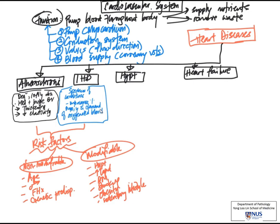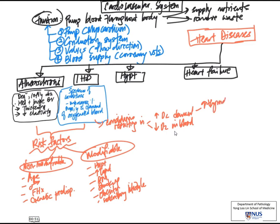For ischemic heart disease, there are also additional risk factors, because the definition involves an imbalance between demand and supply. Some conditions result in either increased oxygen demand or decreased oxygen supply. For increased demand, an example is hyperthyroidism or hormonal abnormalities. For decreased oxygen-carrying capacity in the blood, there are many conditions including anemia, carbon monoxide poisoning, or chronic longstanding lung disease affecting gas exchange.